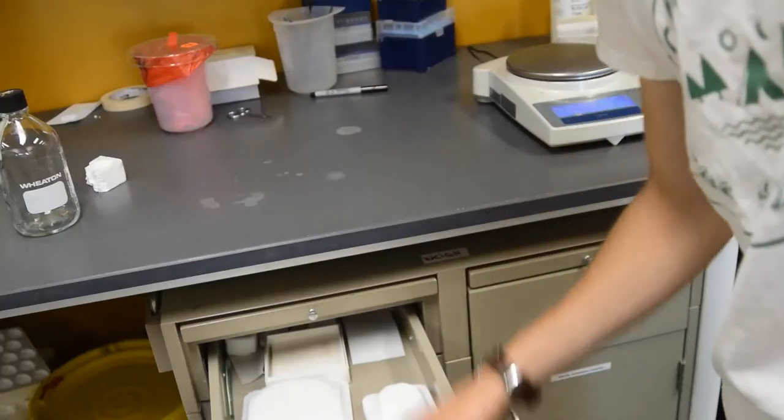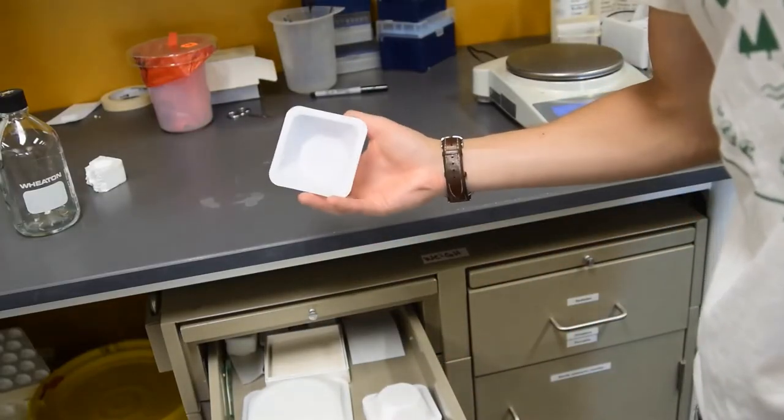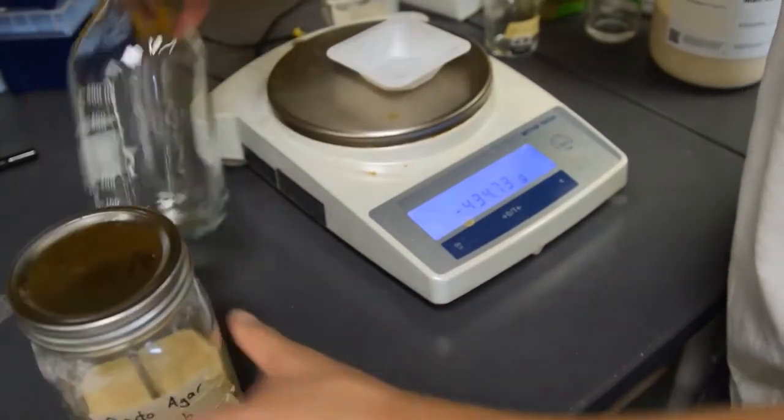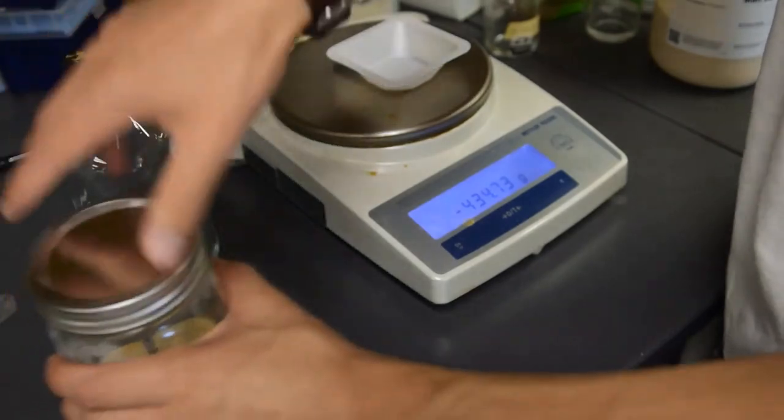Next we will need a weighing dish in which we're going to put the ingredients to weigh them out. These can be found under the bench. The first one, Bacto agar, already has a scoop in it and is kept in an airtight jar.